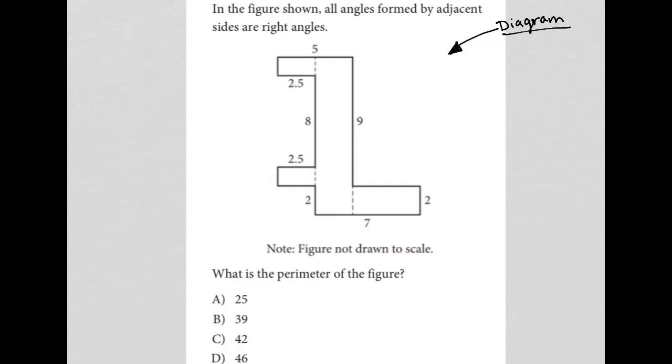Let's read the question. In the figure shown, all angles formed by adjacent sides are right angles. So that's good to know. We're told that this figure is not drawn to scale, which is good to know. We're also asked for the perimeter of the figure. The perimeter of the figure is just the sum of all the side lengths.